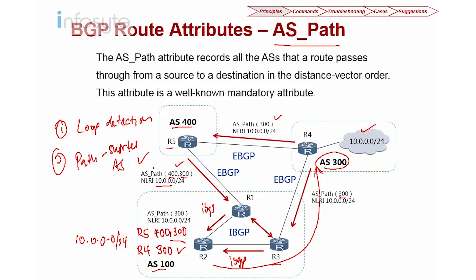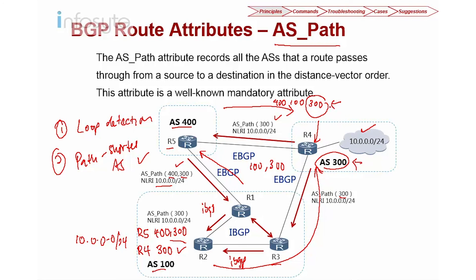AS path is also used for loop detection. In this example, router 4 advertises to R3, R3 advertises to R1, and R1 advertises to AS400 with AS path 100, 300. R5 then advertises back to R4 with AS path 400, 100, 300. When R4 receives this route and sees AS300 in the path — and R4 is in AS300 — the update is discarded. This prevents a routing loop.